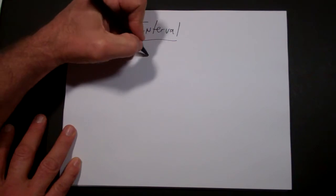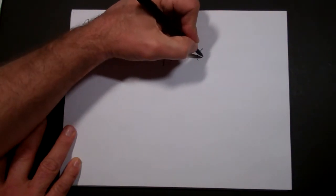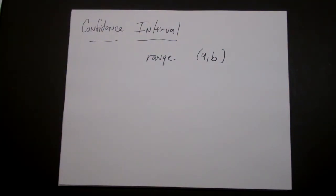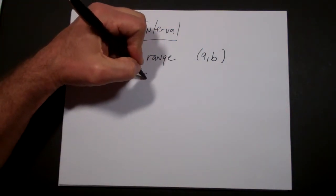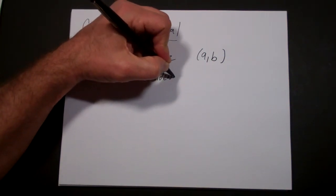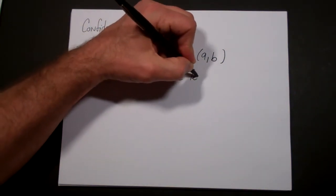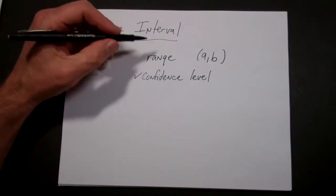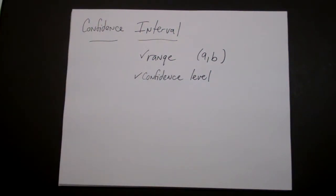A confidence interval is a range of numbers — let's call it A to B. But a confidence interval is more than just a range of numbers. It's a range of numbers of which you are confident to a certain degree that the true value falls within those two numbers. For a confidence interval, you have a confidence level and you have a range of numbers.